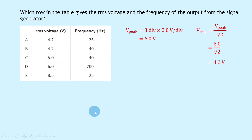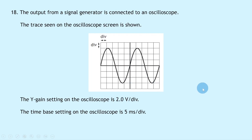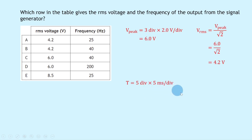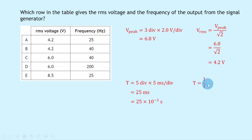To find frequency, identify the period: 5 divisions for one complete wave × 5 ms/division = 25 ms = 25 × 10⁻³ s. Then f = 1/T = 1 / (25 × 10⁻³) = 40 Hz. So the answer is 4.2 V RMS and 40 Hz — answer B.